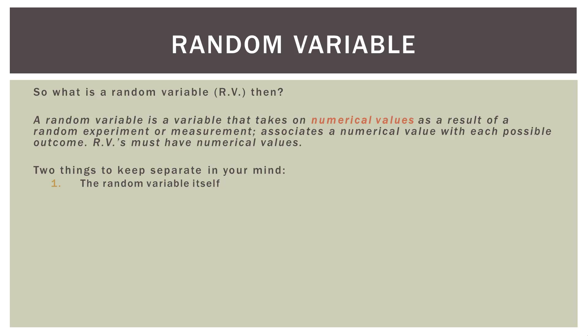So I want you to keep two things separate in your mind. The random variable itself and the possible outcomes or values the random variable can take. In our die example, the random variable values could be 1, 2, 3, 4, 5, or 6. The random variable itself is sort of the throwing of the die. Okay? That's our experiment.